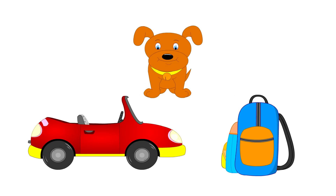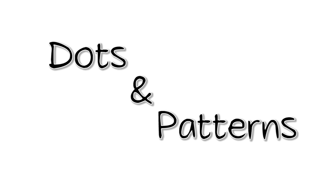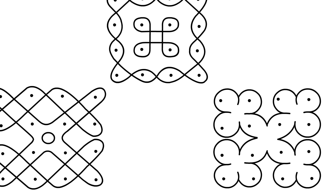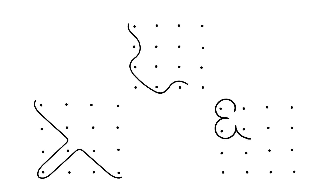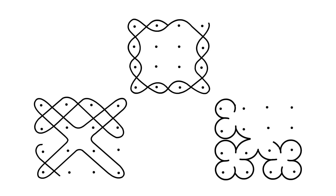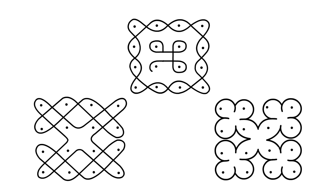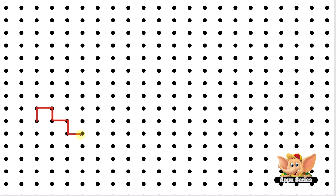Great! So let's move on. Dots and patterns. Have you seen these patterns before? These kinds of patterns can be made using evenly spaced dots. Let's try and draw a few. Note that some lines in the shape are straight, and some are not.